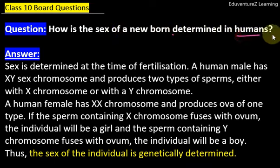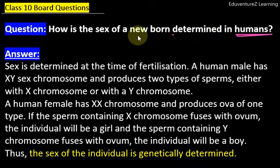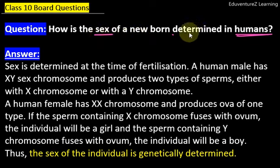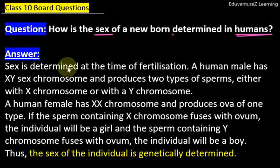Human beings mein, jho new baby honne wala hota hai — uska sex, uska gender kaisa determined honda hai, kaisa pata chalata hai. So the answer is: sex is determined at the time of fertilization.